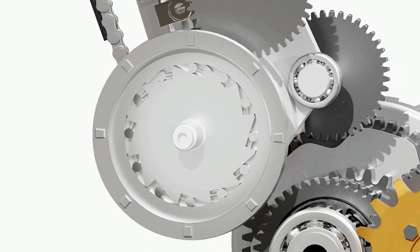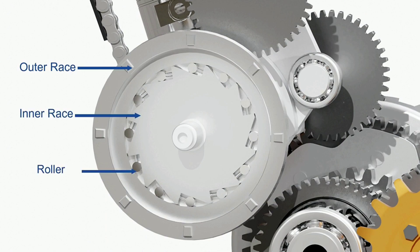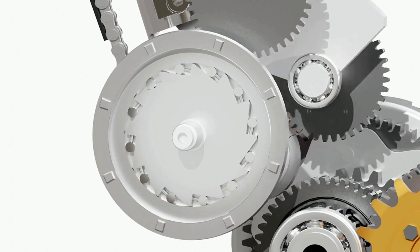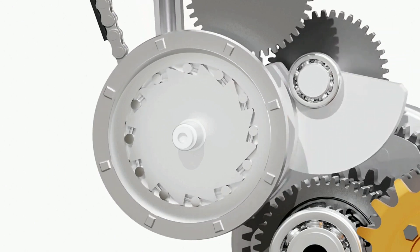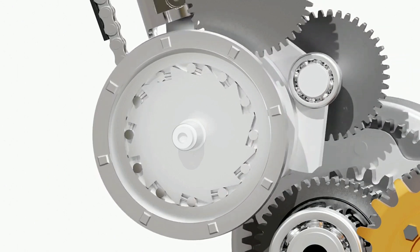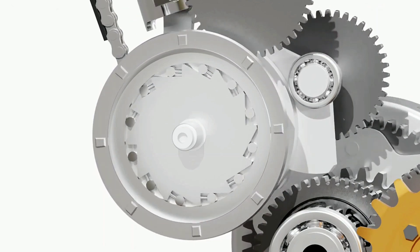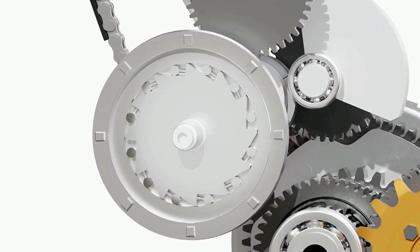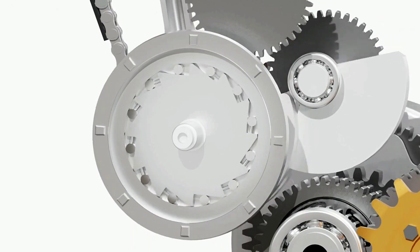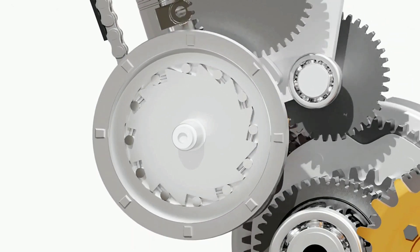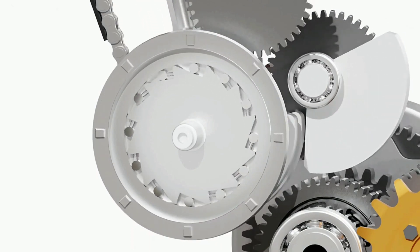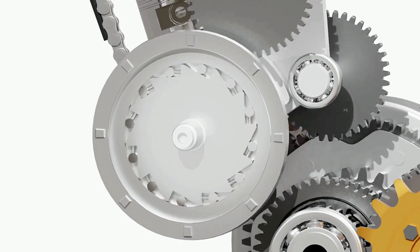The model shown here is of a roller-type one-way clutch. It has an outer race and an inner race with small rollers. As the starter motor spins the outer race in one direction, the rollers get trapped between the surfaces and power is transferred to the inner race and thus to the crankshaft. Once the inner race starts spinning faster than the outer race, the rollers get released, causing the inner race to spin freely.